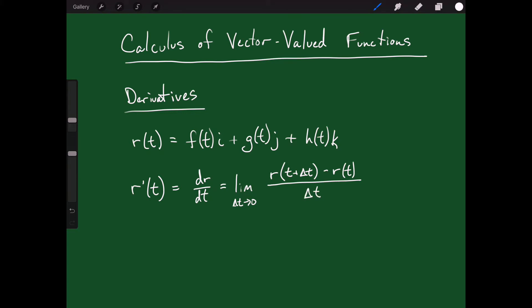When we're using two dimensions instead of saying delta t goes to zero, we would say something like h goes to zero — it's really just the same thing. Delta t is a variable going to zero, so everything is really the same. But if we were to work this all out, what we find is that this really boils down to taking the derivative of f with respect to t in the i direction, plus the derivative of g with respect to t in the j direction, plus the derivative of h with respect to t in the k direction. So to take the derivative of r(t), I just want to take the derivative of each component separately.